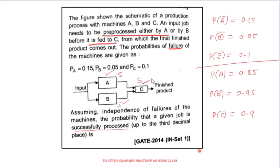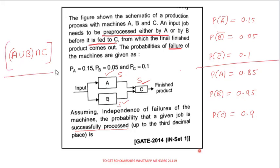For the success of this system, A has to succeed OR B has to succeed — since A and B are in parallel — and then C has to succeed. So the probability expression is P(A ∪ B) ∩ C. We can verify: A and B are parallel, and C is in series with them.